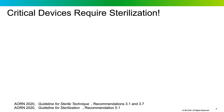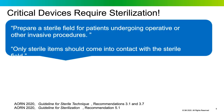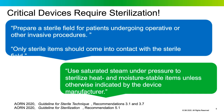From the Spaulding classification scheme, which classifies items based on their intended use, critical devices are defined as instruments that enter sterile tissue, including the vascular system. Reusable critical devices should be cleaned and sterilized between patients because the sterilization process destroys all living organisms, including bacterial spores. The AORN guidelines state that only sterile items should come in contact with the sterile field, and that saturated steam is the preferred sterilant for heat and moisture-stable items unless the device manufacturer's IFU states otherwise.